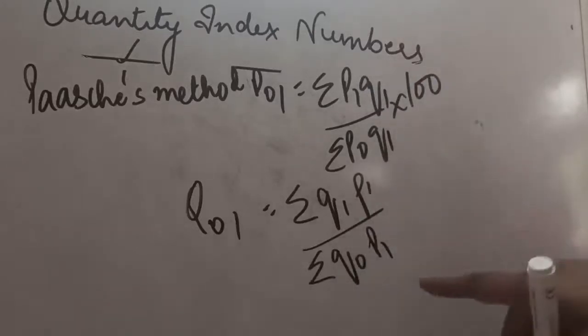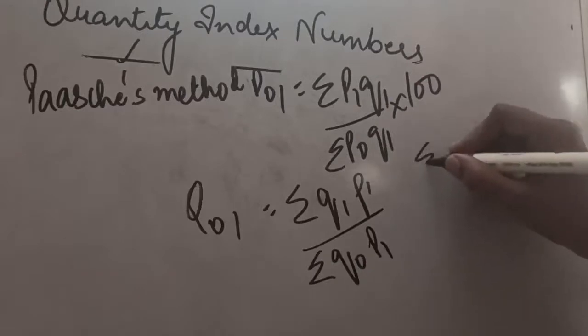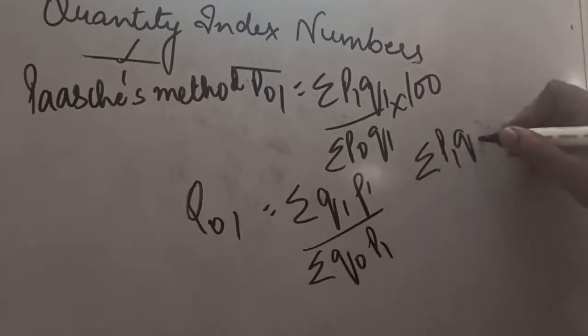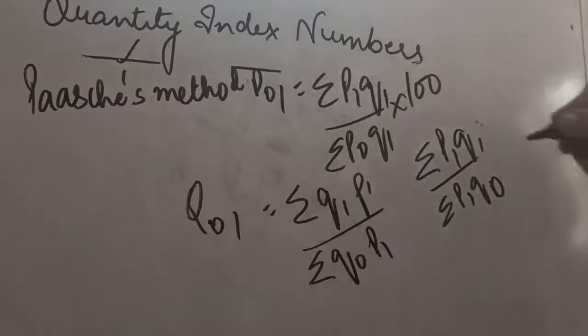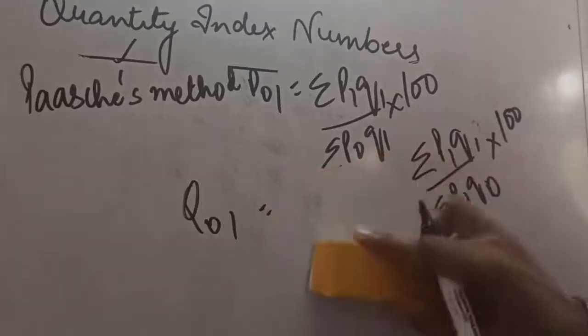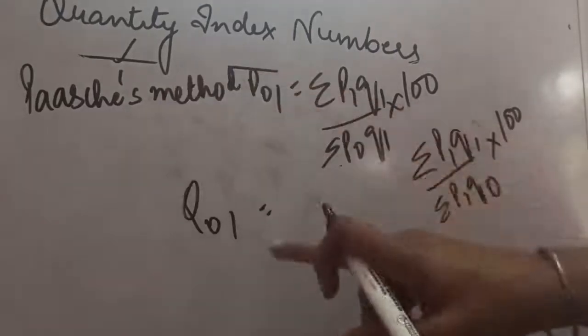But I am not supposed to write the formula like this. So, what will I do? P will be coming at the front, P1 Q1 divided by Sigma P1 and Q0 into 100. So, this will become my Quantity Index for the Paasche method.